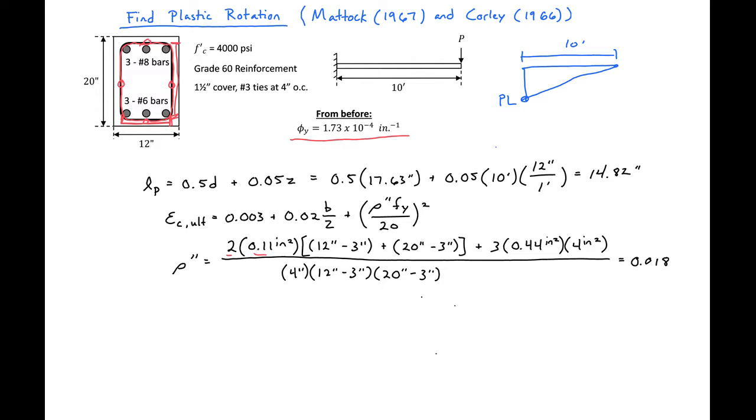Then we have the volume of our compression steel. We have three number six bars in compression. So three times 0.44 times our four inch length. That gives us the total volume of our compression steel. And this is all within our total concrete volume of four inches times nine inches times 17. This will give us our rho double prime equal to 0.018.